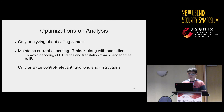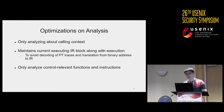Several optimizations achieve reasonable overhead. First, we only reason about points-to relations within the call stack — when an object leaves the current scope, we ignore it rather than copying points-to relationships around. We also maintain the currently executing IR blocks along with execution to avoid decoding PT traces and translating binary addresses to IR. We also only analyze control-relevant functions and instructions — those that manipulate code pointers in the source code.